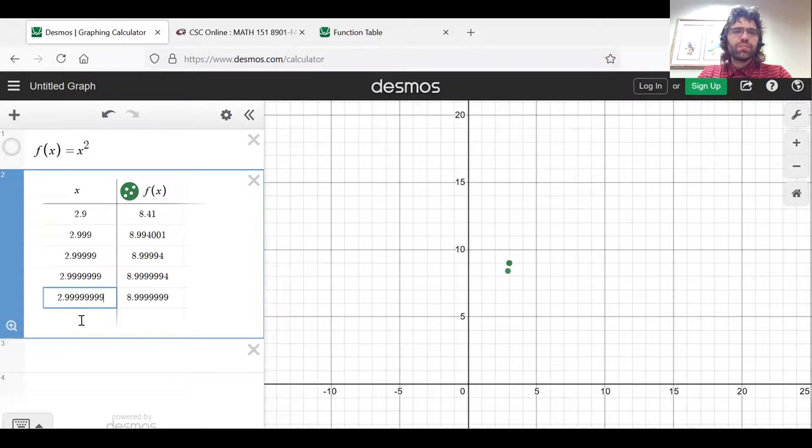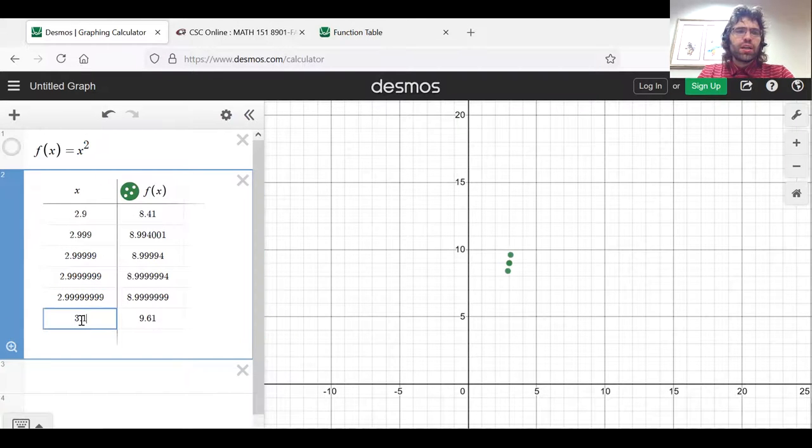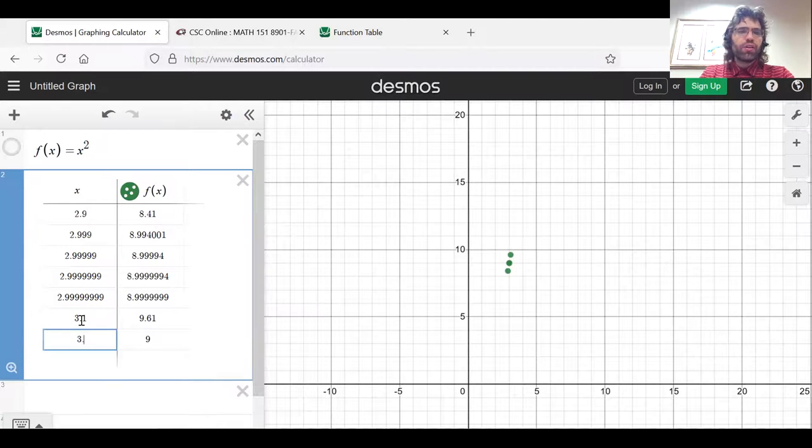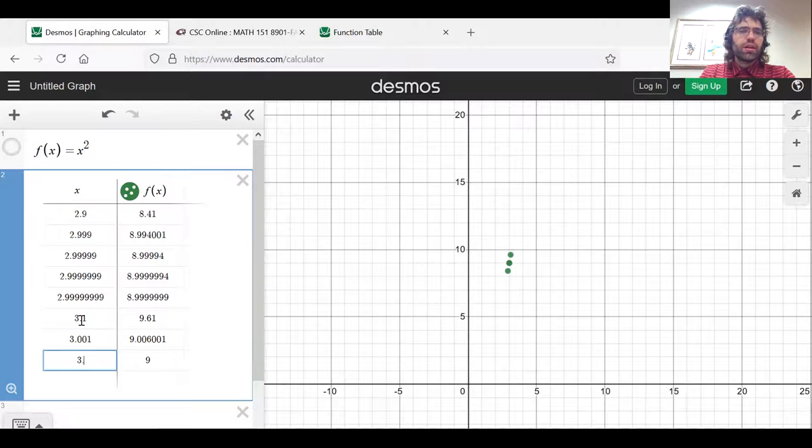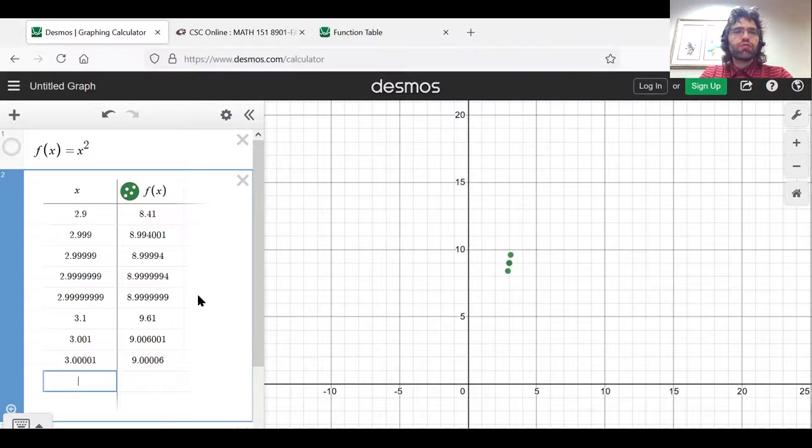And we could similarly start a little above 3, and get closer and closer to 3 from the other direction.